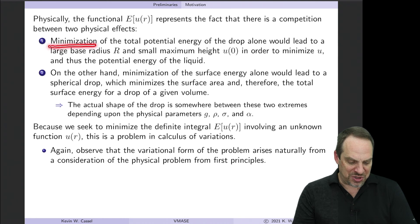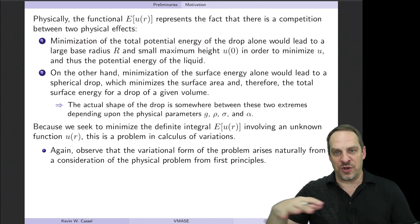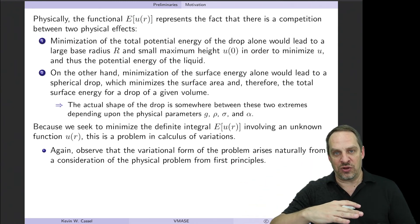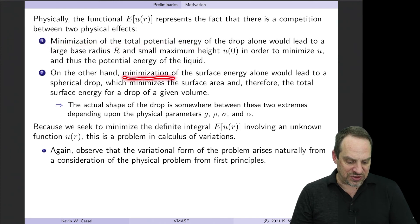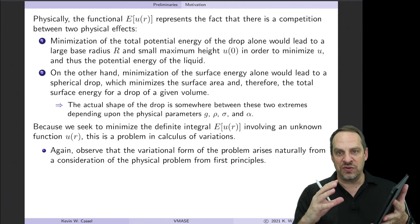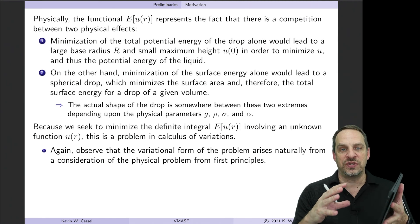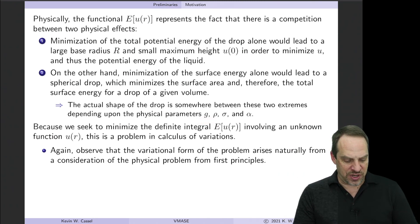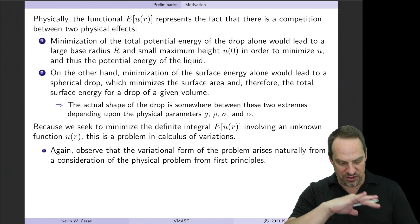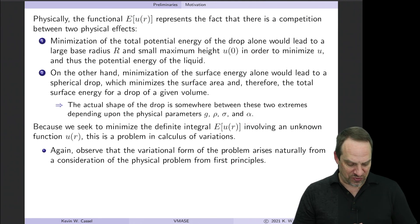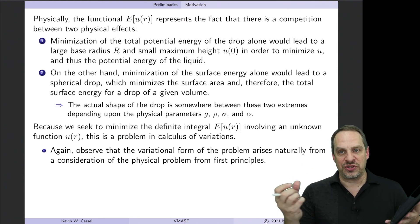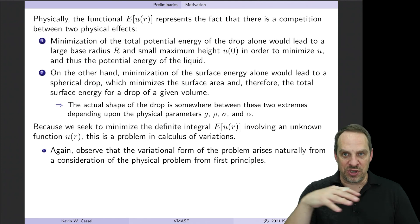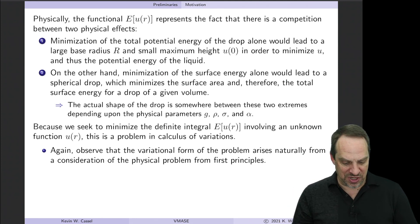The actual shape is a competition between two effects. If we only had potential energy, to minimize it the drop would become very wide with minimal height — a large, wide, very shallow drop. On the other hand, to minimize surface energy, you'd end up with a sphere: for a given volume, minimum surface area requires a sphere. The reality will be somewhere in between, depending on G, the planet you're on, the density of the liquid, the surface tension at that interface, and the contact angle from Young's equation. Neither energy is as small as it could be alone, but combined they're as small as possible given those parameters.